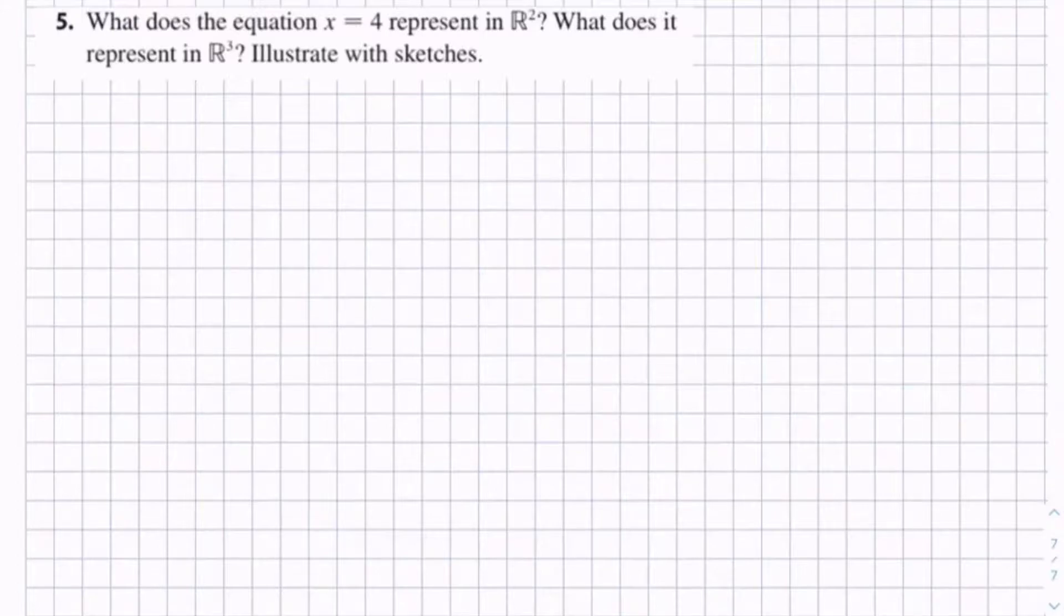So in case you've never seen R2, R3 with that fancy looking R, what it does is it specifies how many dimensions you're working in, like how many dimensions is the space you're working in. So in R2 you're working in two dimensions. In R3 you're working in three dimensions.